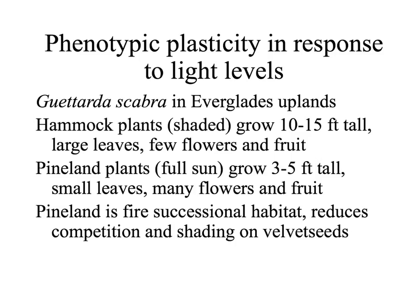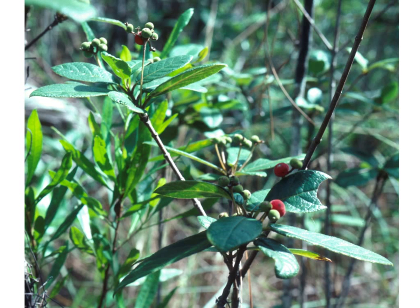Not only leaf morphology but entire plant morphology is affected by light levels — what we might call phenotypic plasticity. An example can be seen in the velvet seed of our Everglades, Guettarda scabra, where hammock plants growing in the shade may be 10 to 15 feet tall or even taller, with very big leaves and very few flowers and fruit, whereas plants in the pinelands growing in full sun are much shorter, with smaller, thicker leaves and many flowers and fruit. The pineland, being a fire successional habitat, reduces competition and shading, so plants there mature at a smaller size and reproduce abundantly. It's called the velvet seed because of its red velvety mature fruit.